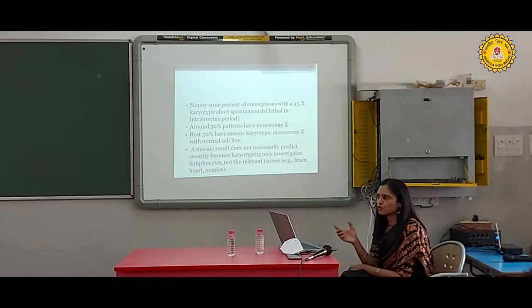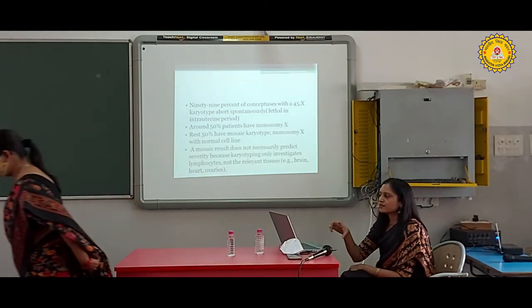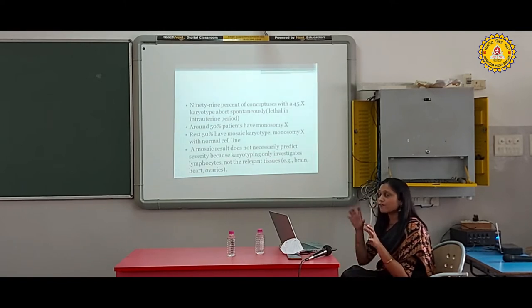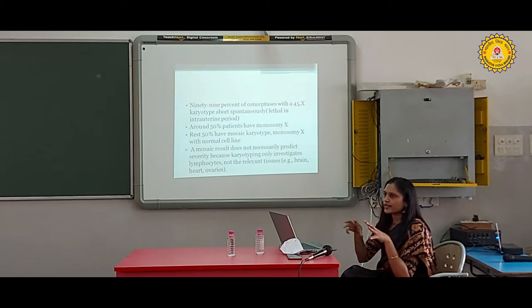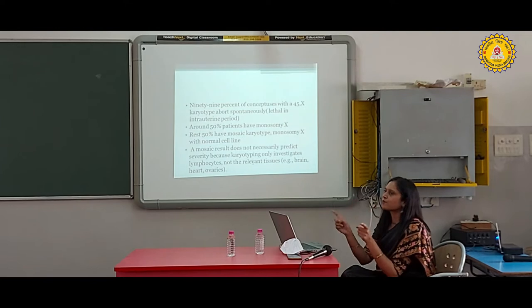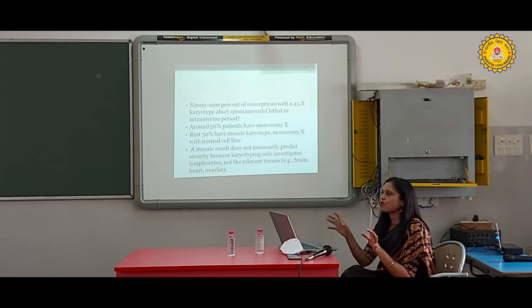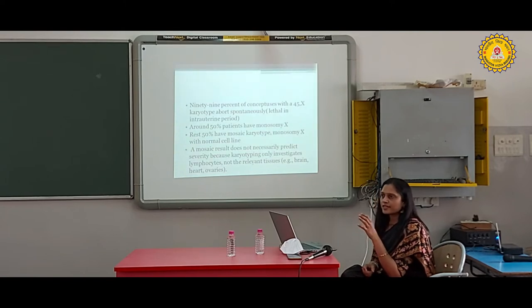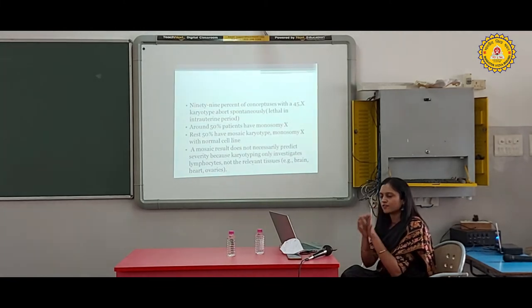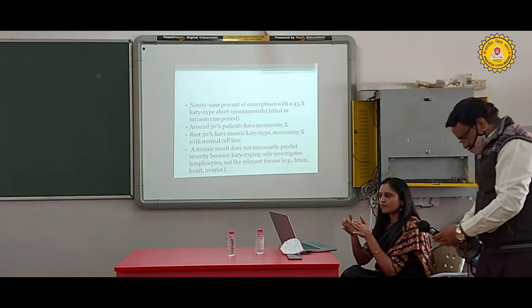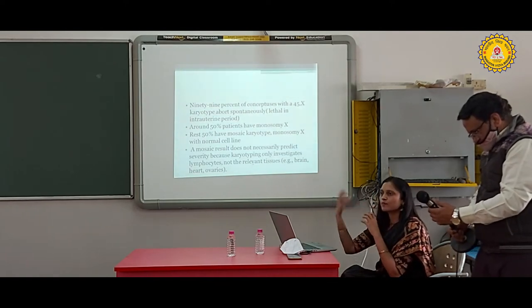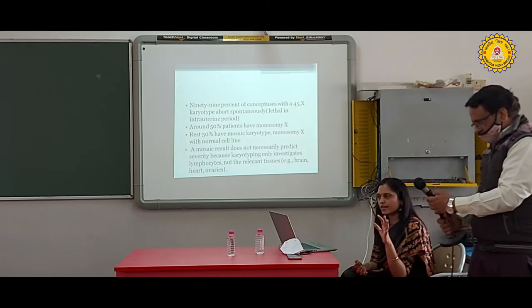Of those 1% that survive, around 50% of patients have monosomy with one X chromosome, and 50% have mosaic forms. In mosaic cases, some cell lines are 45X and some are normal 46XX. A person's body has many tissues and organs with two types of cell lines. Some females may also have 46XY cell line along with 45X.